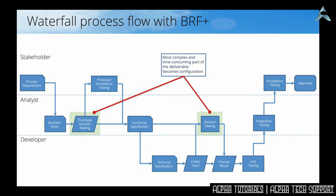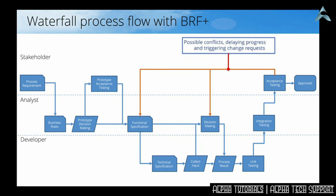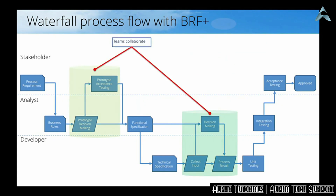Again, the major change when you use BRF Plus is that the decision-making now becomes configuration instead of coding. Of course, there can still be conflict lines, but they will be less likely to happen because you already had an approved prototype for the decision-making — though it can still happen that updates are needed in either the functional specification or the decision-making. With the introduction of rapid application development via the Business Rule Framework, the Waterfall process now also forces collaboration between the stakeholder and the analyst for approval of the prototype, and between the analyst and the developer to get the deliverable developed.